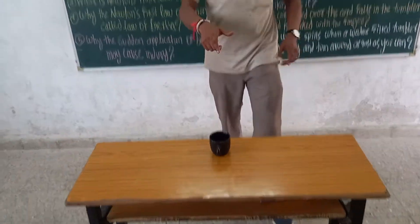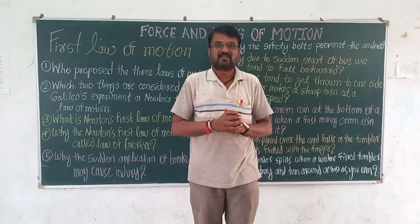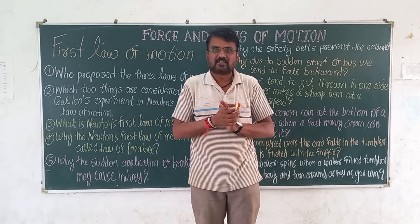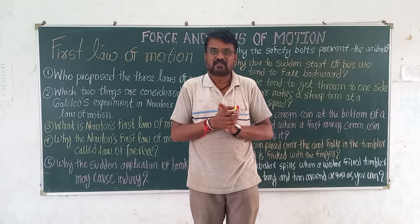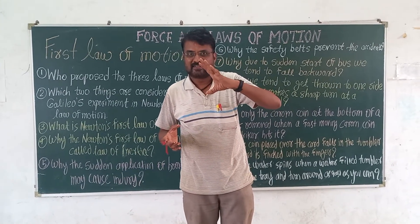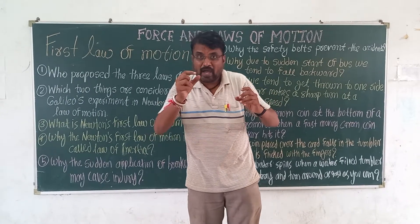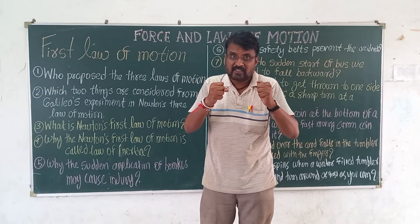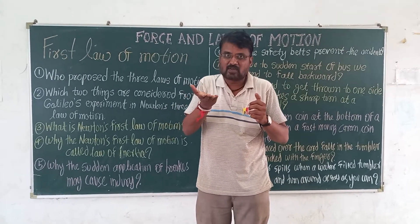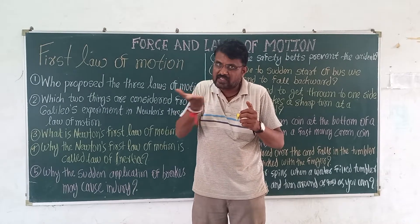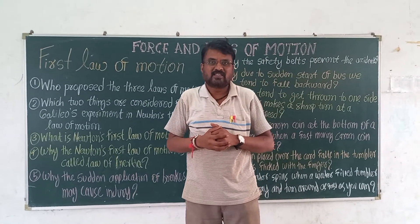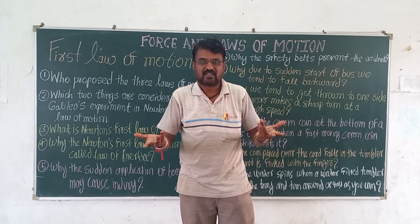See here — I am flipping this card. What happened? Due to the force applied, the card went away, but the coin fell inside the cup. What is the conclusion? Force was applied on the card, not on the coin. So the coin maintained its inertia — it did not go with the card but fell into the cup. This is the first law of inertia.